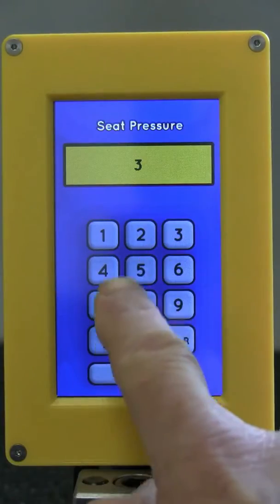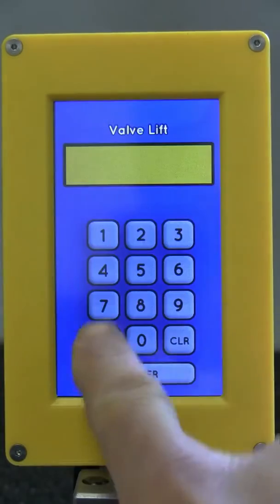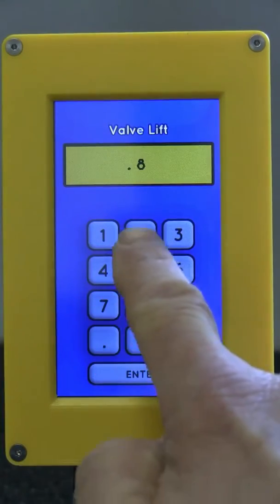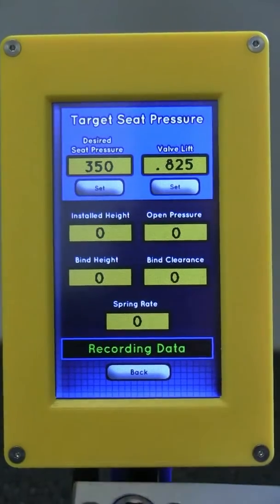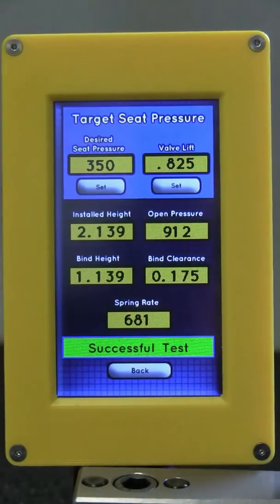In the target seat pressure screen, type in the valve lift. After making a pull it will give you the installed height to get your desired seat pressure. It will also give you the open pressure, bind height, bind clearance, and valve spring rate.